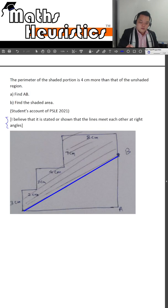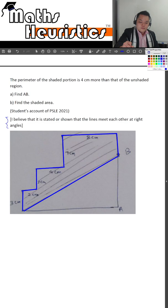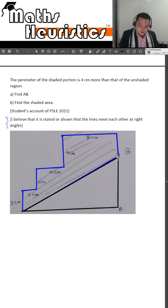this vertical length, this horizontal length, this vertical, horizontal, vertical, horizontal, vertical length. Then for the unshaded triangle, its perimeter comprises of this vertical length, this entire horizontal vertical length and this slanted length over here.